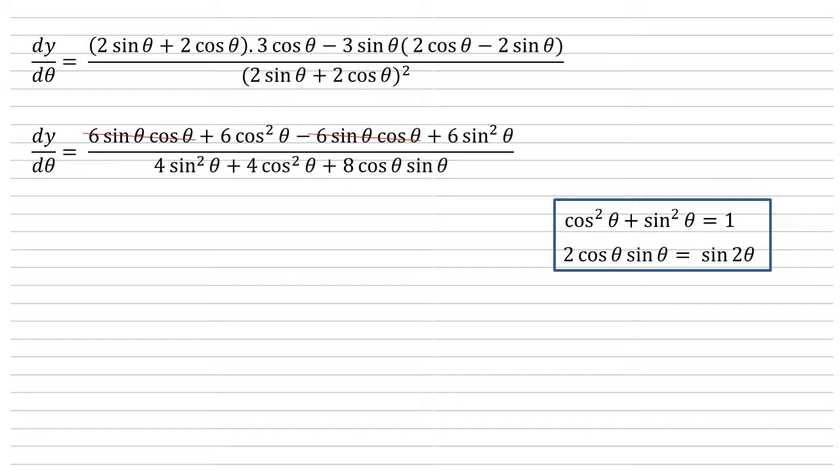By factorising the top and the bottom we're going to get it into a form where we can do some conversions using our identities. For the numerator we're going to factorise out the 6, so 6 times cos squared plus sine squared. On the denominator we're going to factorise the 4 out of the first two terms, so we get 4 lots of sine squared plus cos squared.